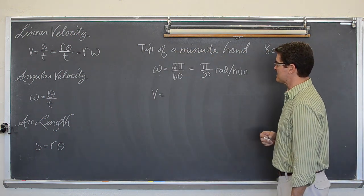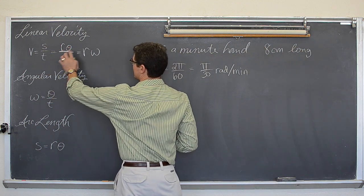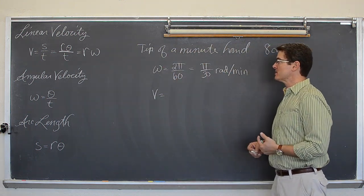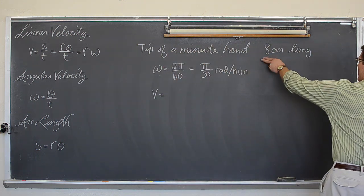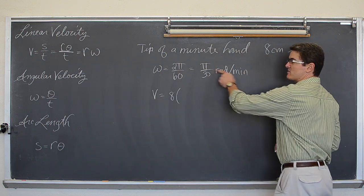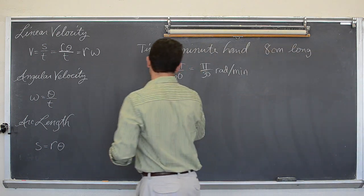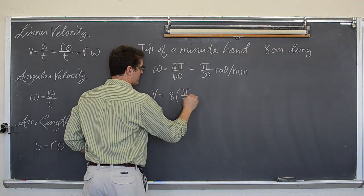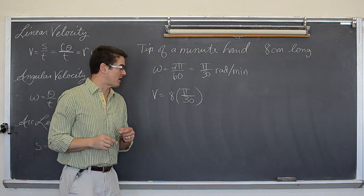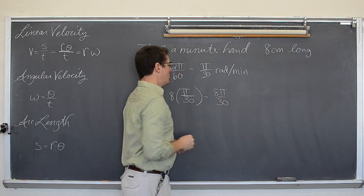Now, what is the linear velocity of that minute hand that takes an hour to go around the clock? Well, linear velocity can be found by taking arc length and divide it by time, r times θ divided by time, or if you have already figured out angular velocity, r times ω. So the minute hand has a radius of 8, and every minute that minute hand is moving π over 30 radians. So 8, the radius, times ω, the angular velocity,